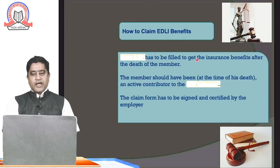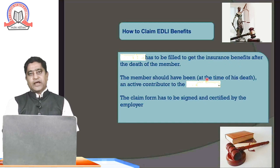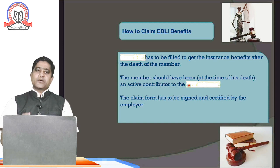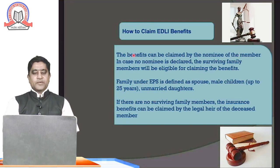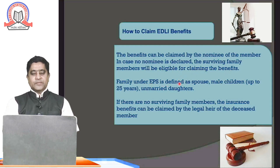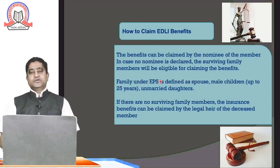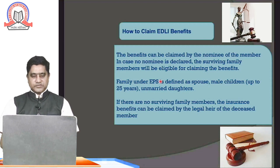Form 5IF has to be filed to get the insurance benefit after the death of the member. The member should have been an active contributor to EPF at the time of death, and a death certificate issued by the municipal corporation is required. The claim form has to be signed and certified by the employer. The benefits can be claimed by the nominee; if no nominee was declared, the surviving family members are eligible. The family under EPF scheme is defined as: spouse, male children up to 25 years, and unmarried daughters with no specified age limit.